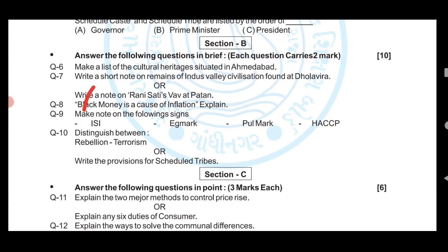Question number ten: Distinguish between rebellion and terrorism. Alternatively, you can write on the provisions of Scheduled Tribes. The answers to these questions are on your screen.